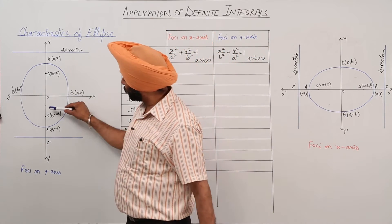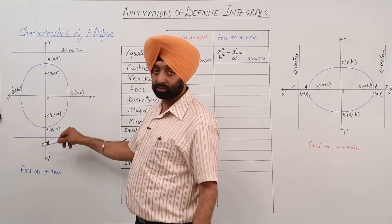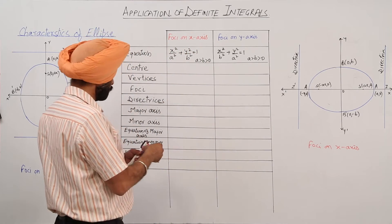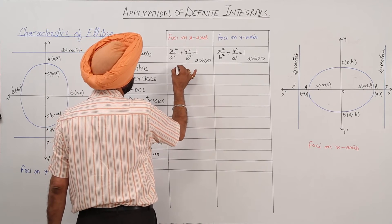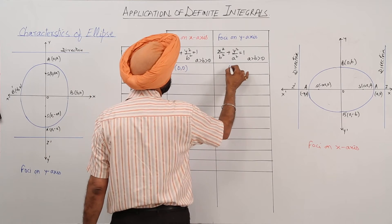this side: two foci, two directrix, x-axis, y-axis. Now, let's fill it. Center: origin. Center, and here also add the origin.